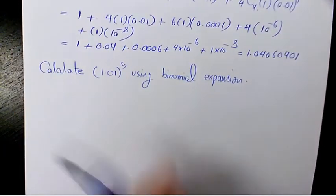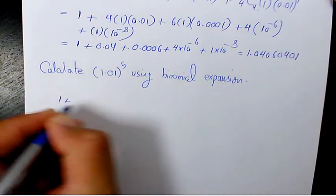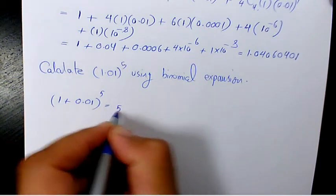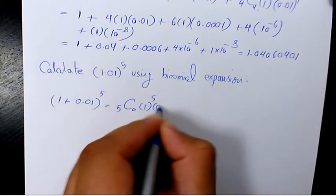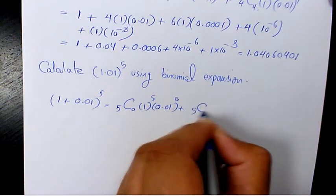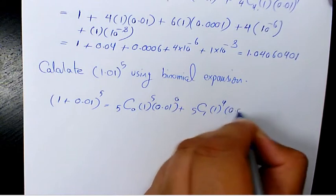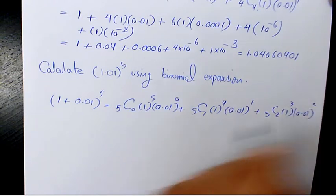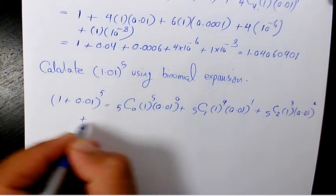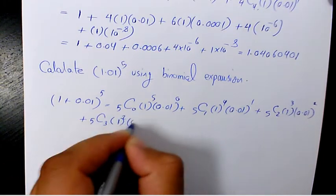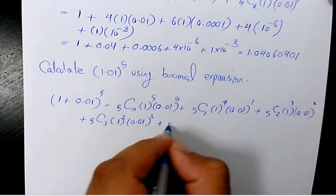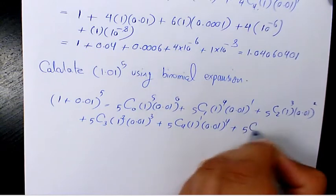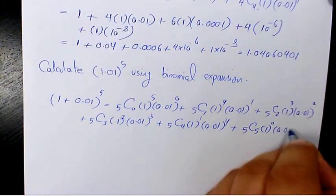Now let's look at 1.01 to the power of 5. That's going to be (1 + 0.01) to the power of 5, which expands as 5C0 · 1^5 · 0.01^0 plus 5C1 · 1^4 · 0.01^1 plus 5C2 · 1^3 · 0.01^2 plus 5C3 · 1^2 · 0.01^3 plus 5C4 · 1^1 · 0.01^4 plus 5C5 · 1^0 · 0.01^5.